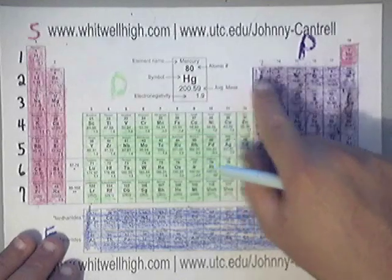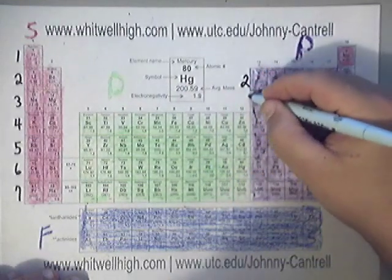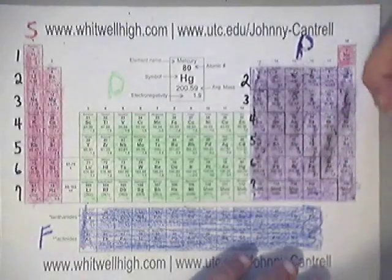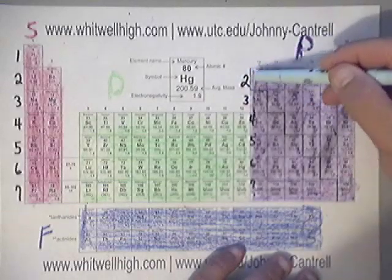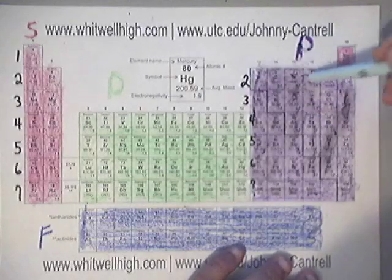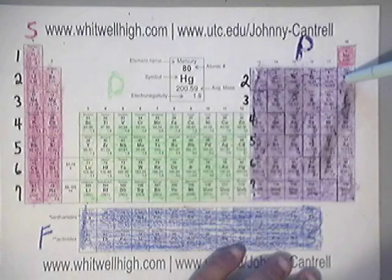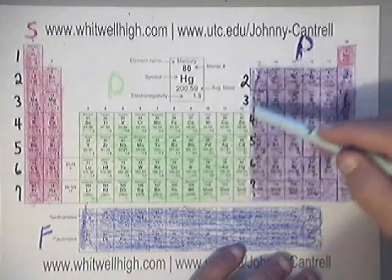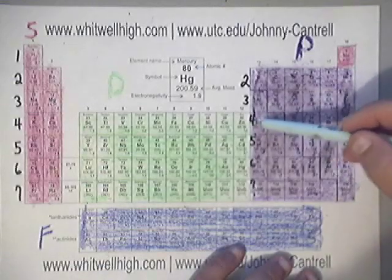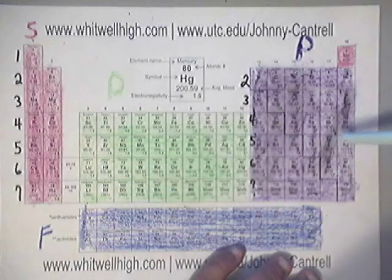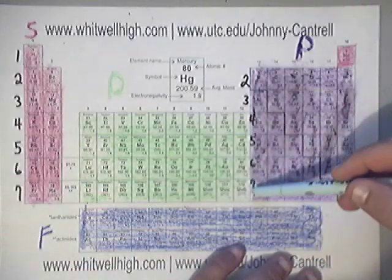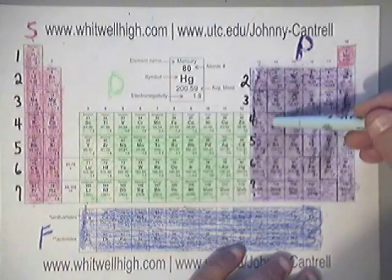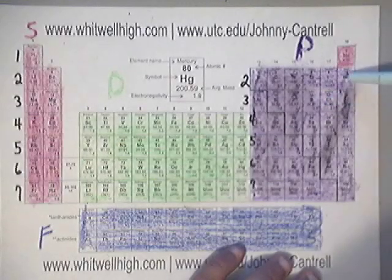This P block starts with a two, so it runs rows two through seven. Their locations: this would be 2P1, 2P2, 2P3, 2P4, 2P5, 2P6. Then aluminum will be 3P1, 3P2, 3P3, 3P4, 3P5, and 3P6, and so on. That'd be 4P1 through 4P6, 5P1 through 5P6, 6P1 through 6P6, and 7P1 through 7P6. So for example, that's 7P6, this would be 6P2, this would be 5P4, this would be 4P2, this would be 3P5, and this would be 2P6.